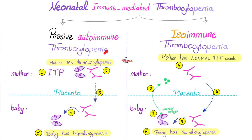In passive autoimmune thrombocytopenia, the mother was already sick — specifically with immune thrombocytopenic purpura (ITP). Mommy already had antibodies against her own platelets. So the mother had thrombocytopenia, and her antibodies left her blood, crossed the placenta, went into the baby's blood, and attacked the baby's platelets. Now even the baby has thrombocytopenia. These are passive, pre-existing antibodies — historic ones not intended to attack the baby, but they cross the placenta and do so anyway.